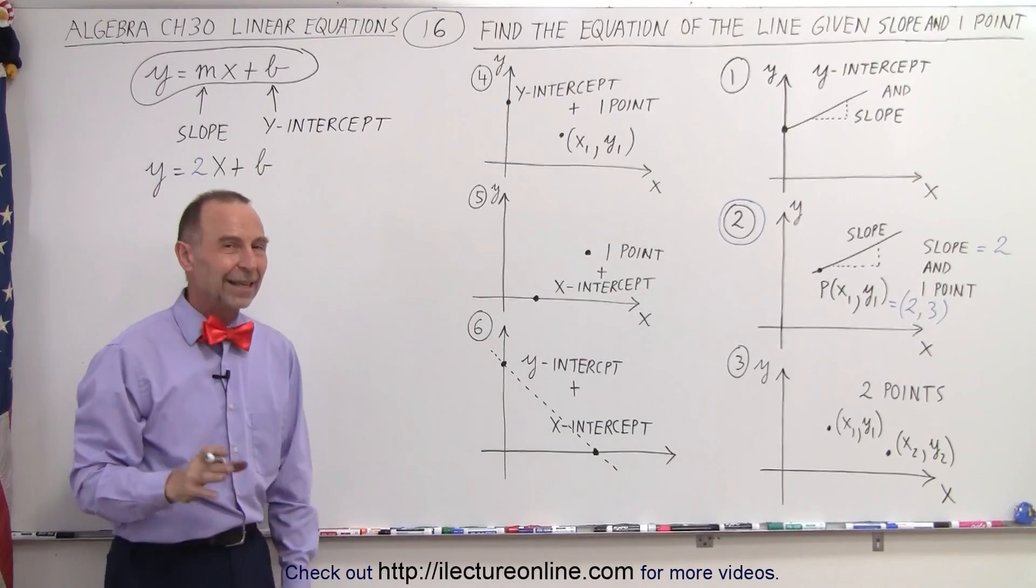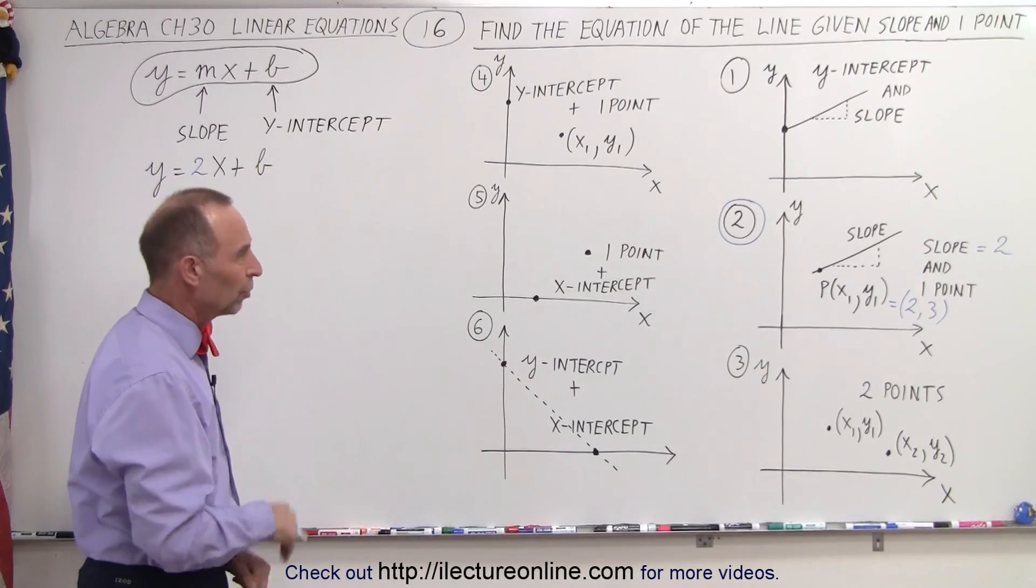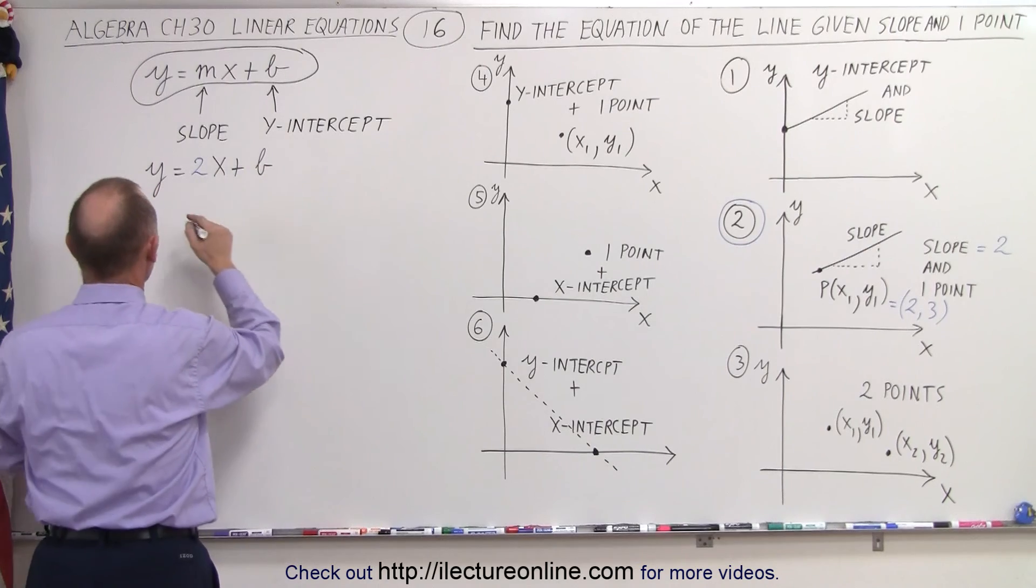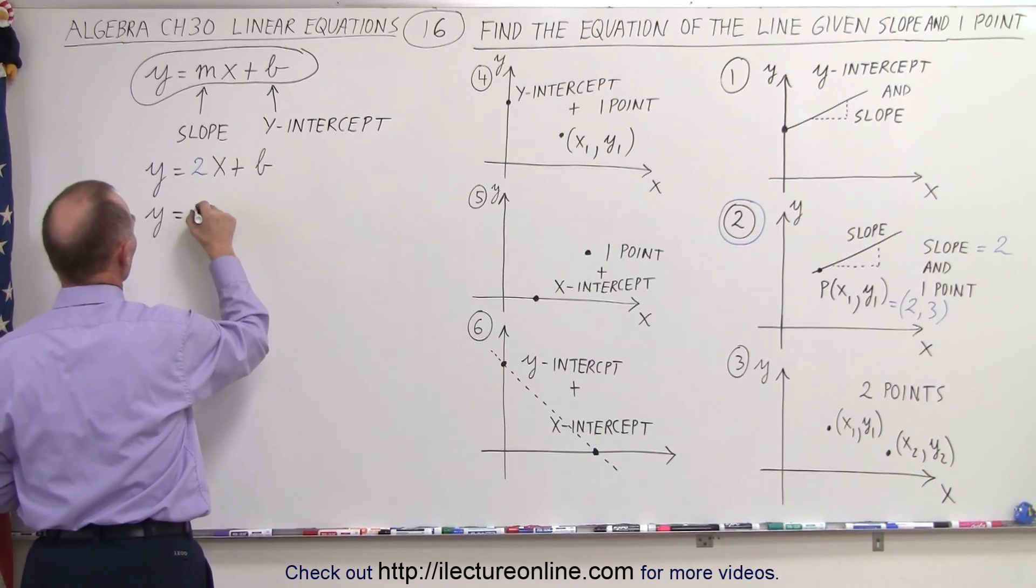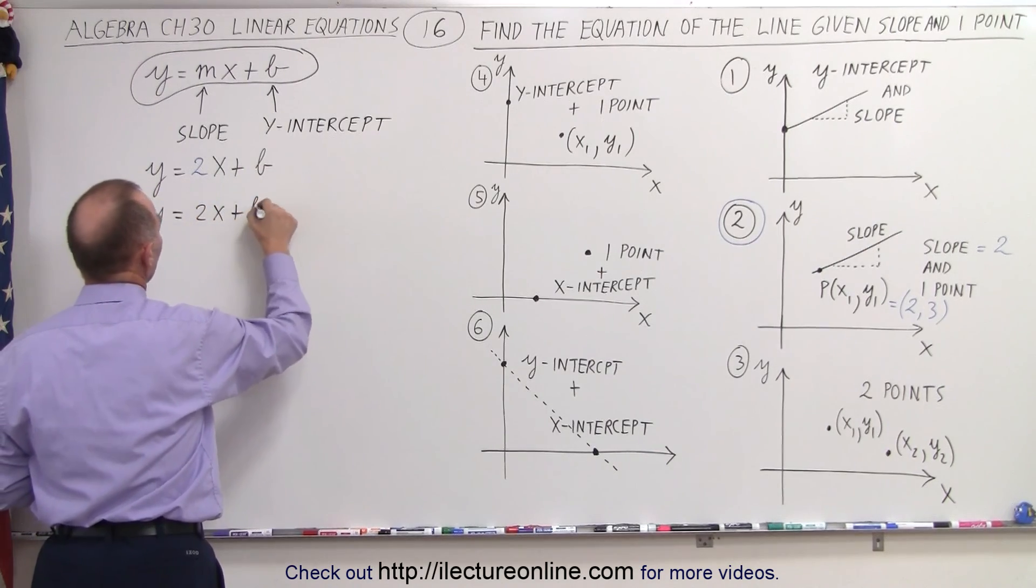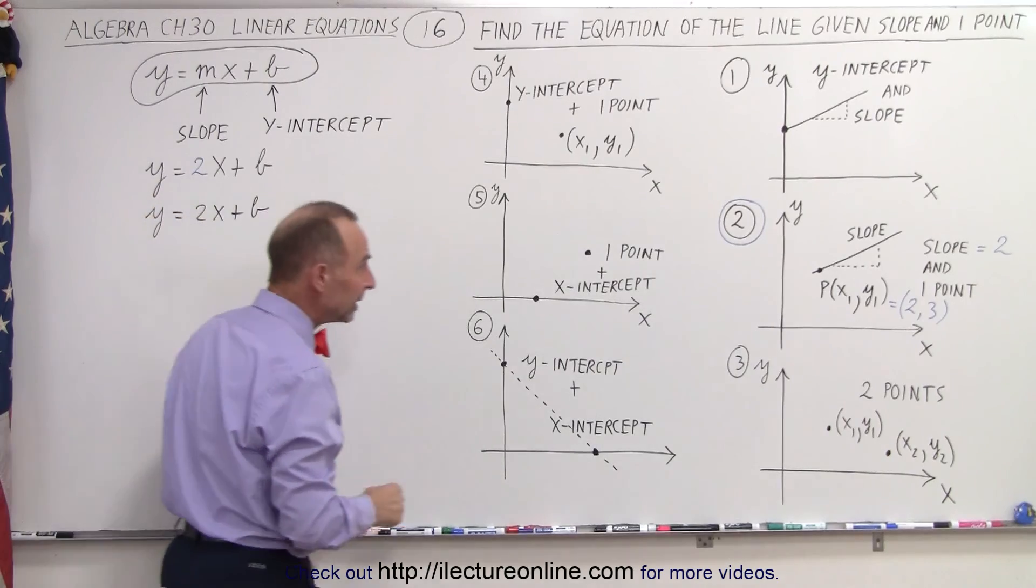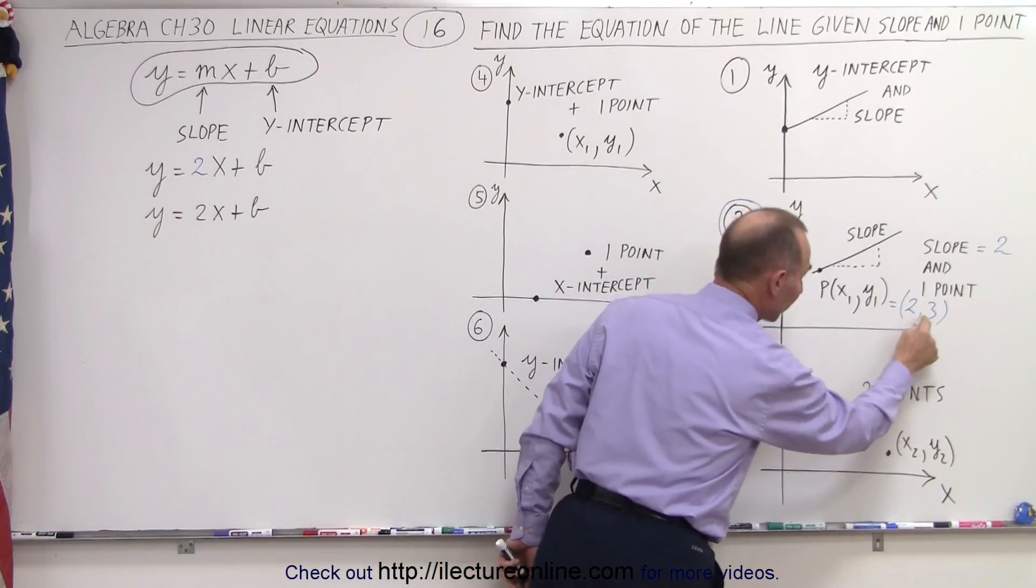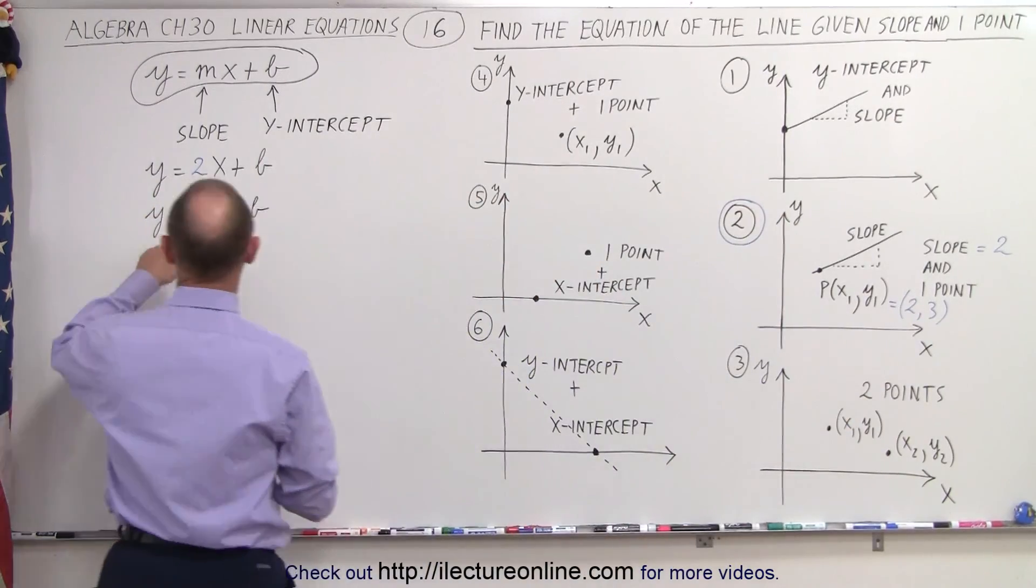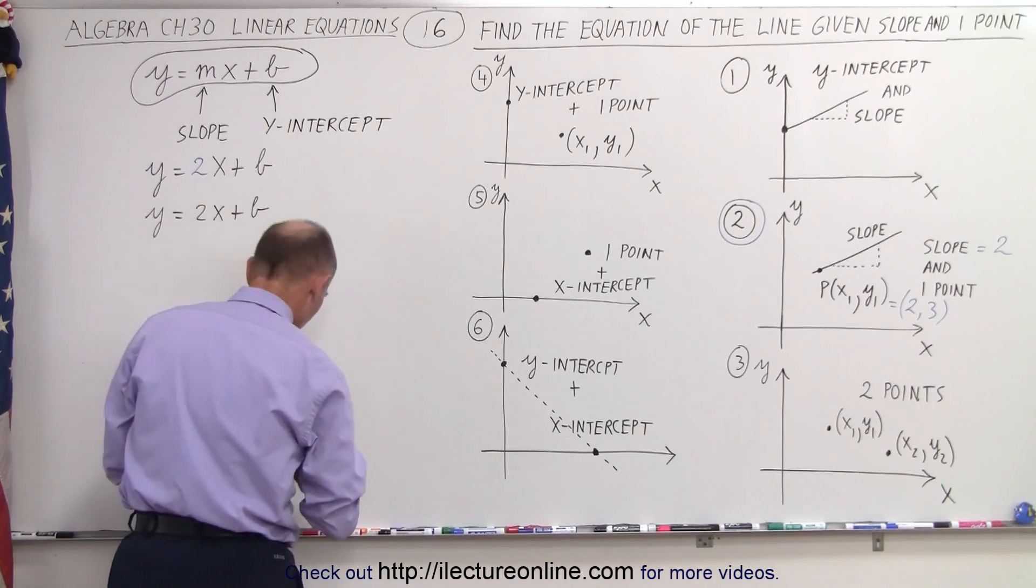So the only thing left to do is to find the y-intercept. To do that, we grab the equation the way we have it. We have y equals 2x plus b, and now we're going to plug in the coordinates of the one point that's given to us in for x and y in the equation.